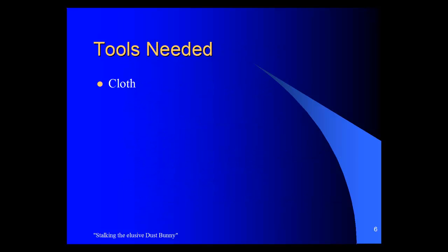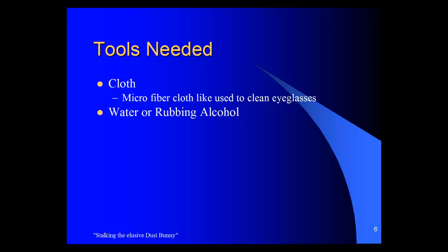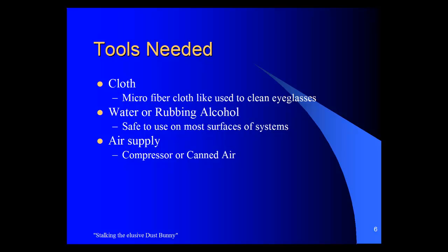Tools needed: first, a cloth. The best suggested cloth is a microfiber cloth, like the ones used to clean eyeglasses, or a lint-free soft cloth. Water or rubbing alcohol to clean surfaces with — these two are safe to use on most surfaces. An air supply — this could be a compressor that you plug into the outlet with an air hose, or it can be canned air. Canned air is available at most office supply stores like Staples or Office Depot, Best Buy, and places like that.